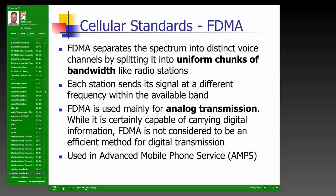FDMA separates the spectrum into distinct voice channels by splitting it into uniform chunks of bandwidth — like radio stations each broadcasting at a different frequency. It is used mainly for analog transmission, is capable of carrying digital information but not efficiently, and was used in AMPS (Advanced Mobile Phone Service), the early analog cellular system.